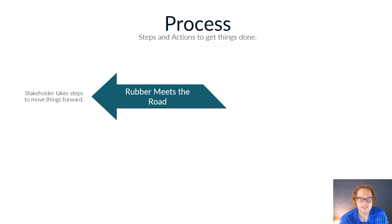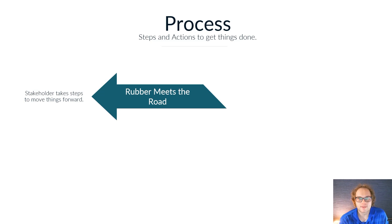This is where the stakeholders are actually taking action. We have internal stakeholders that might be processing something to help the company move forward. Likewise, we might have external stakeholders that need to engage in some behavior in order to move forward with the company. Effectively, the process is allowing us to make those steps happen and outline what needs to take place in order for that process to be completed.